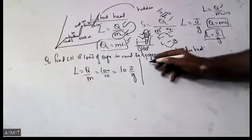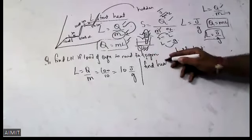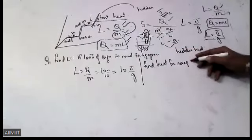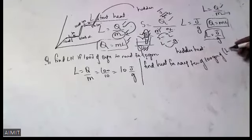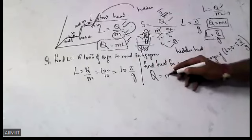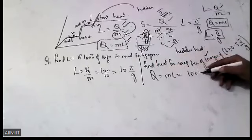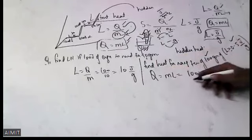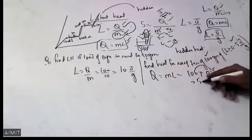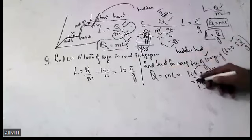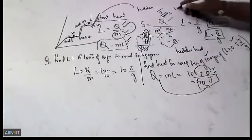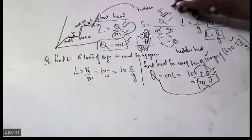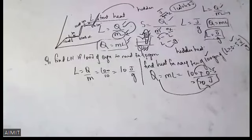One more question: Find heat for raising the temperature of 100 grams of substance if Latent Heat is 0.5 Joules per gram. The formula is Q is equal to mL. M is 100, Latent Heat is 0.5 Joules per gram. Also note: units of heat are Joules, and to convert calories to Joules, 1 calorie is equal to 4.2 Joules.